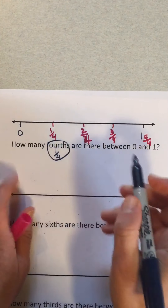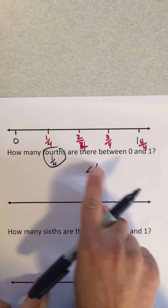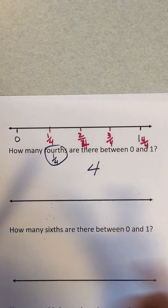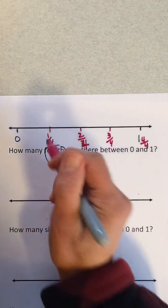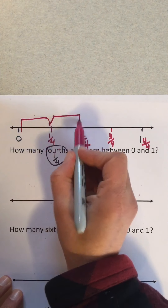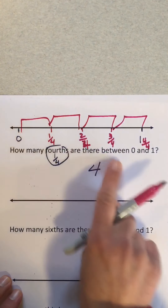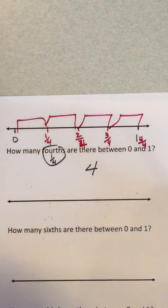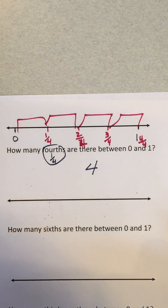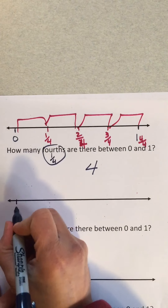How many parts are there? There are four — four fourths. One, two, three, four. How many do you have? Four.